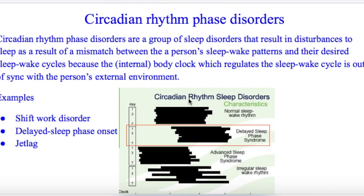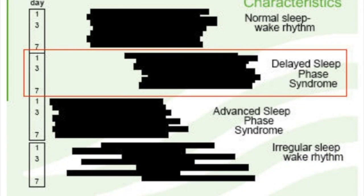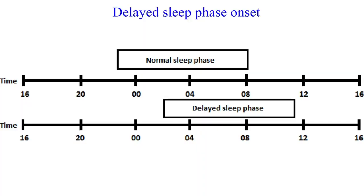There are a variety of circadian phase disorders. In the VCE course, we need to cover shift work disorders, delayed sleep-phase onset for teens, and the effects of jet lag. This video intends to provide a broad overview of circadian rhythm sleep-phase disorders, with more detailed videos to follow covering jet lag, shift work-phase disorders, and delayed sleep-phase onset. But just to illustrate the concept, let's walk through an example.